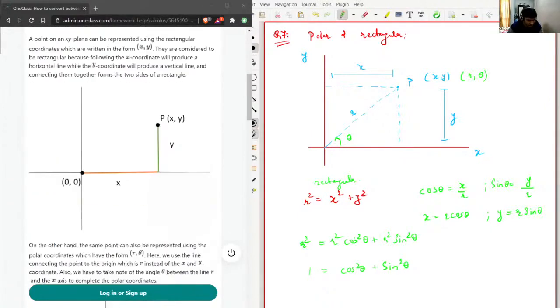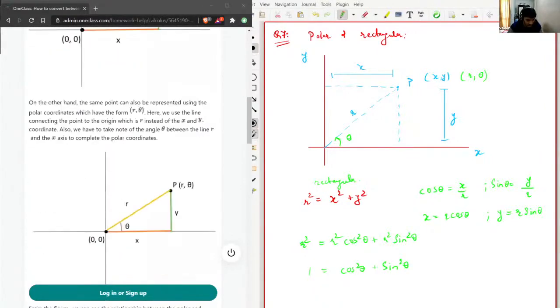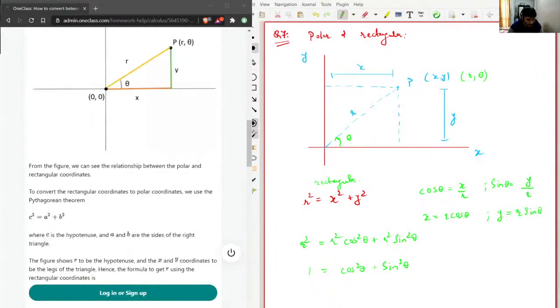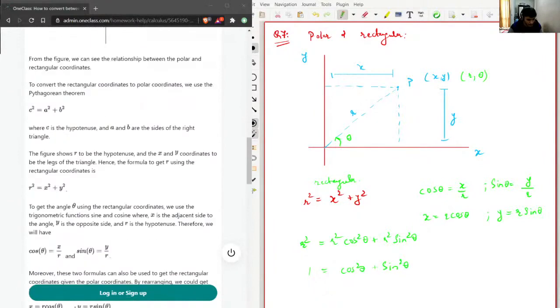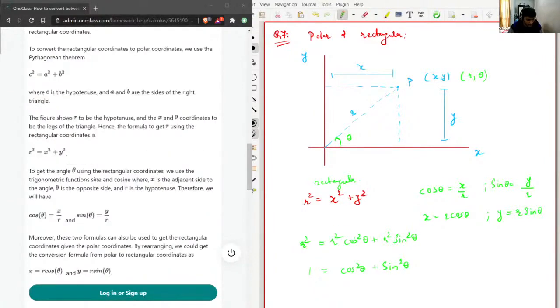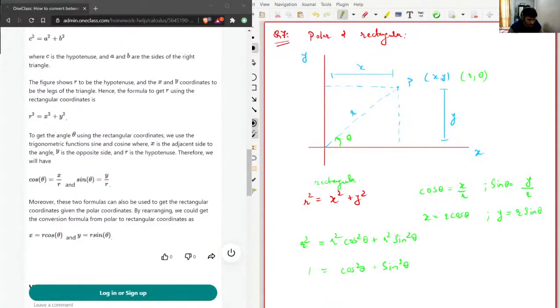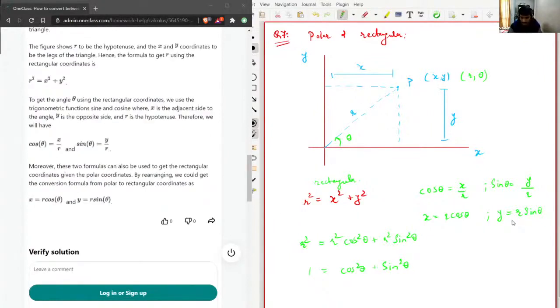On the other hand, the same point can be represented as r comma theta instead of this. So they have r squared equals x squared plus y squared, x equals r cos theta, and y equals r sine theta.